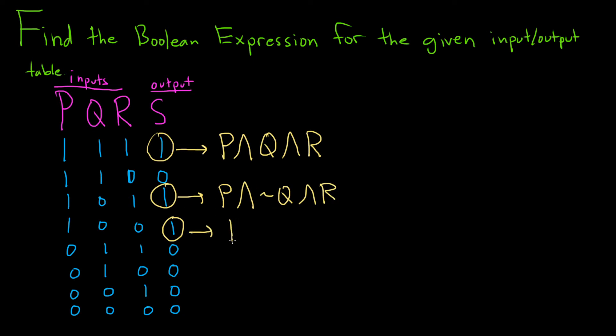And then this one here would be p, and it's not q, not r, because they're both 0s. So and not q and not r. So whenever you have a 1, you just put the letter. And whenever you have a 0, you put the not and then the symbol.